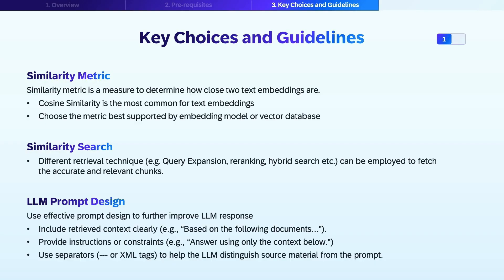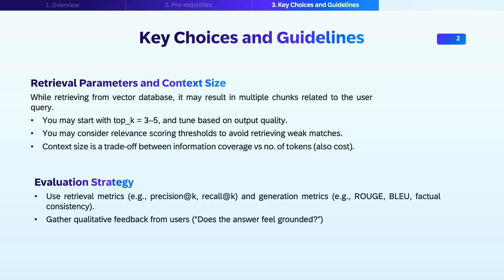For example, you may instruct a large language model to provide its response based upon the following document, or answer using the context below. As an advanced prompt designer, you may use separators or XML tags to distinguish source material from the prompt. While performing search in a vector database, you will receive multiple results, and how many chunks to consider as augmented context is another key choice — typically a trade-off between quality and cost. You may start with top_k equals 3 to 5 and then tune as per output quality. It's important to evaluate results in all generative AI applications, so use retrieval metrics like precision and recall, or generation metrics like ROUGE, to evaluate your results.